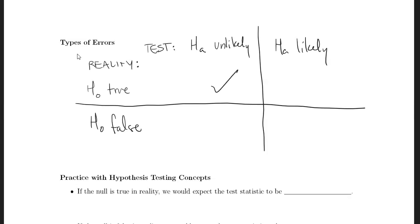If the null hypothesis is true and our test has told us that the alternative hypothesis is likely, we have committed what is called a type 1 error. Conversely, if the null hypothesis is false and our test tells us that the alternative hypothesis is unlikely, that is a type 2 error.